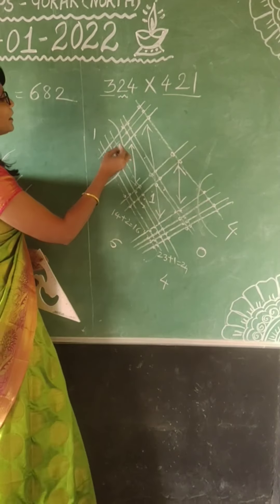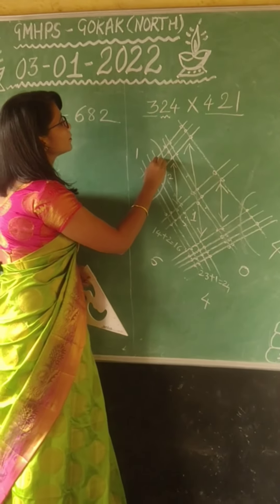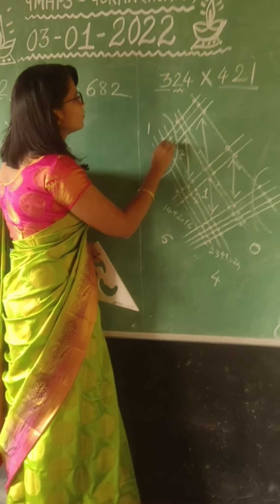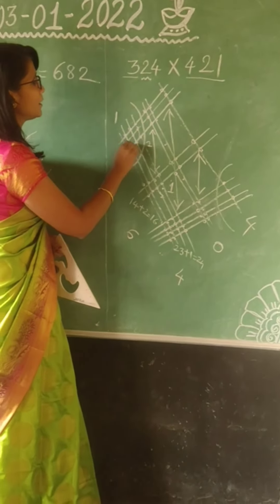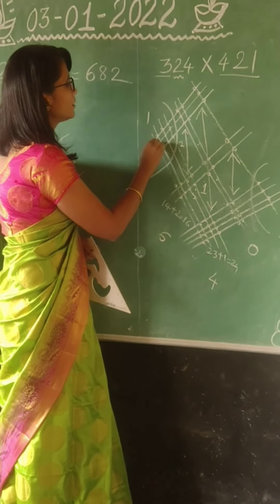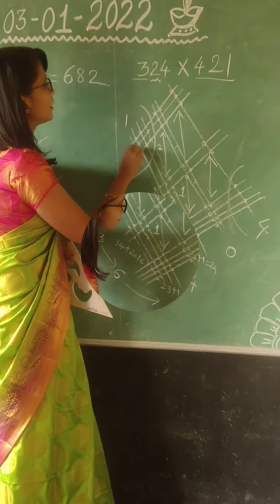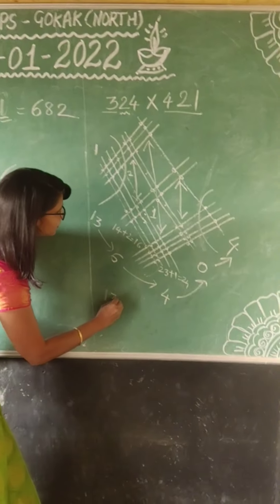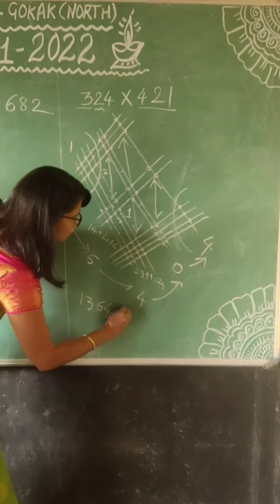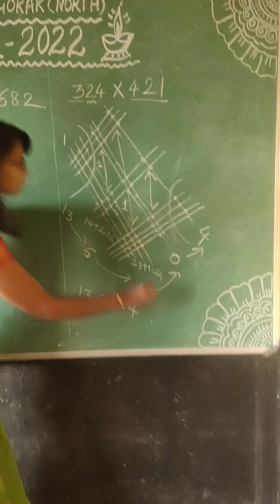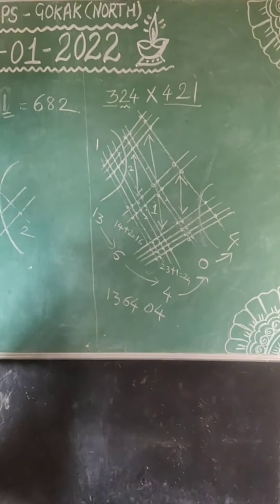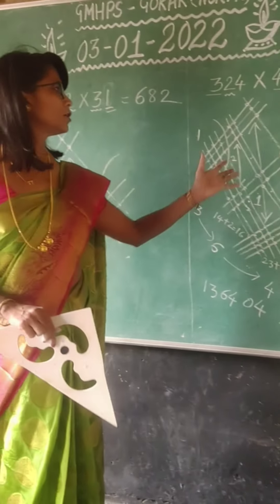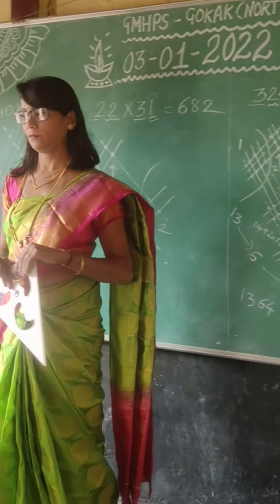Now let us count this intersection: 1, 2, 3, 4, 5, 6, 7, 8, 9, 10, 11, 12. And this one is 0 with an answer. So the final answer is 1, 3, 6, 4, 0. This is what is called as match magic or magic method.